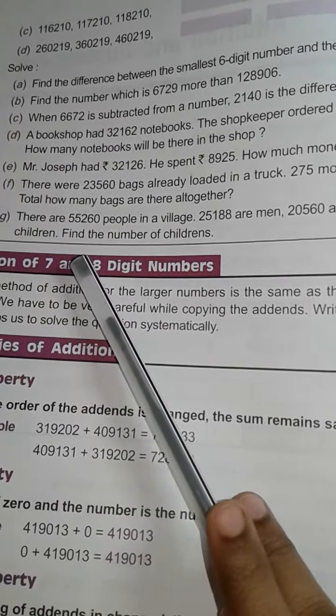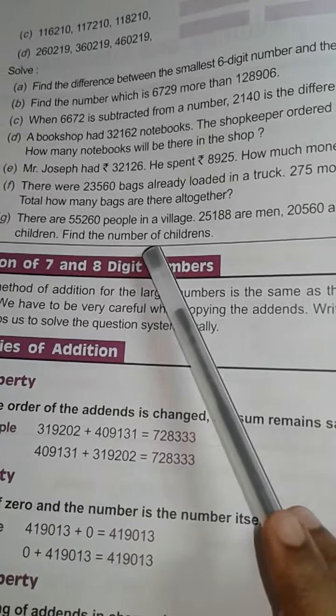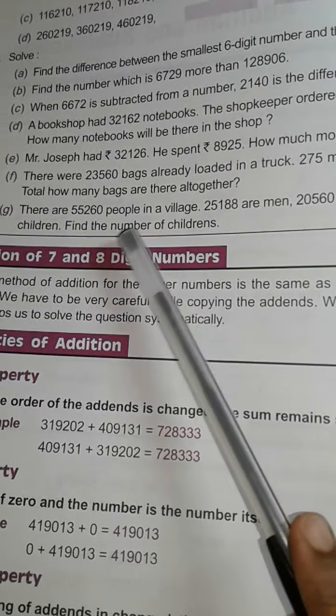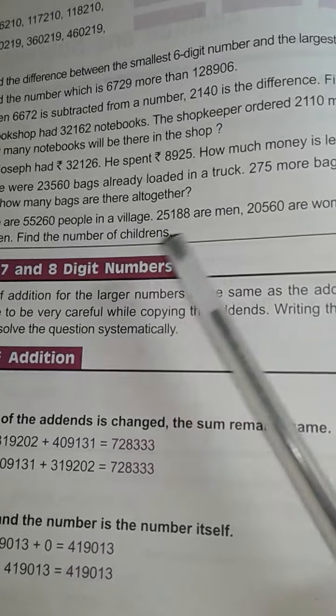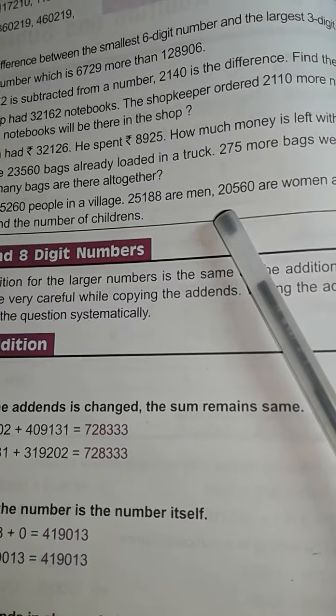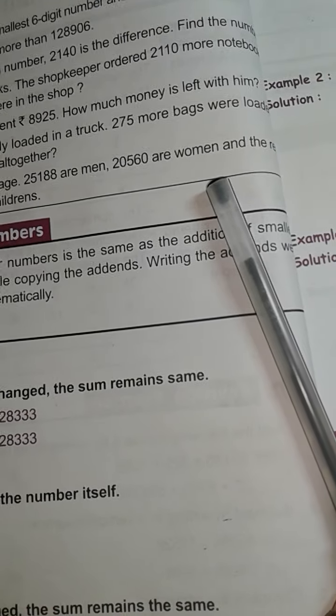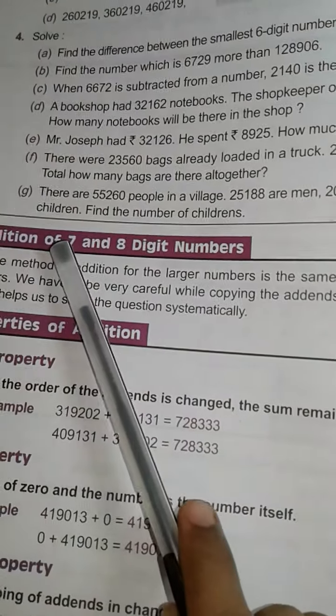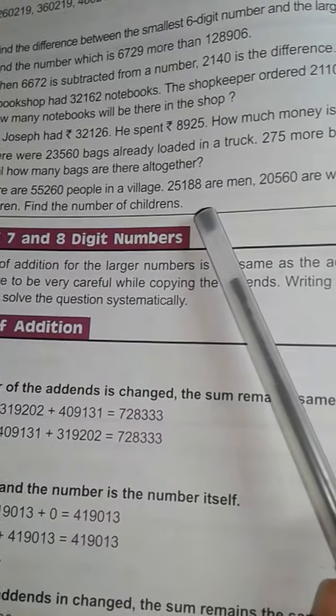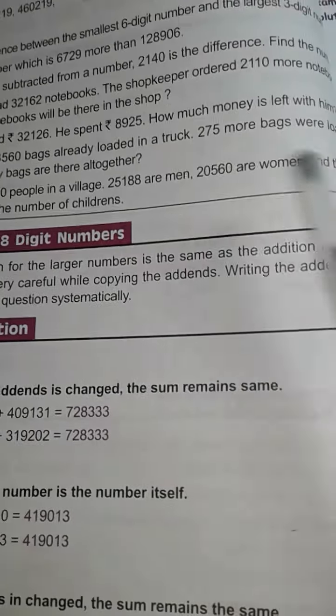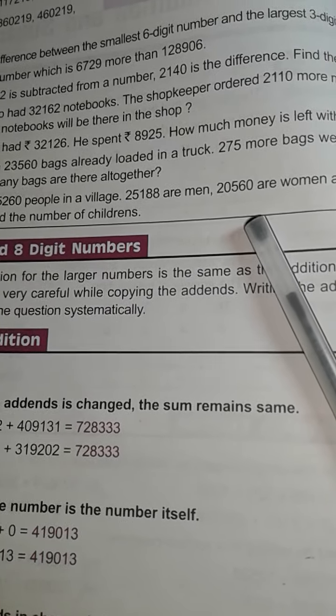G. There are 55,260 people in a village. So total number of people in the village is this much. Then 25,188 are men, then 20,560 are women, and the rest children. Find the number of children. So this is the total number of people in the village. This is the male member's number, and this is the female member's number.